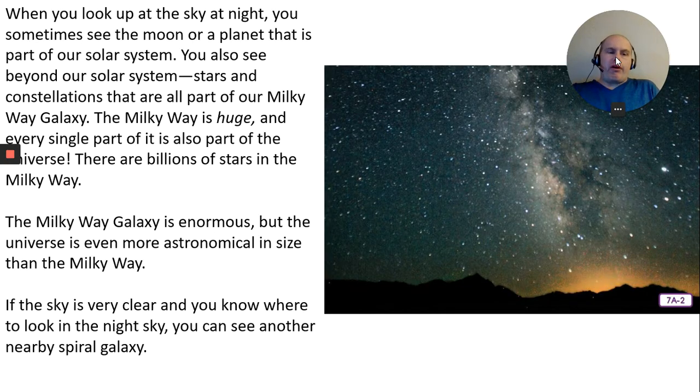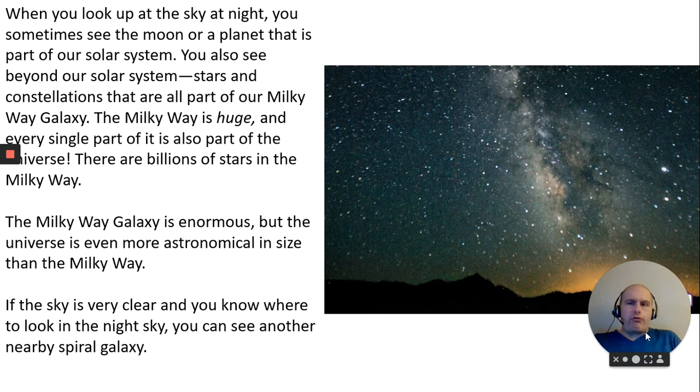So when you look up at the night sky, you sometimes see the moon or a planet that is part of our solar system. You also see beyond our solar system stars and constellations that are all part of our Milky Way galaxy. The Milky Way is huge, and every single part of it is also part of the universe. There are billions of stars in the Milky Way. The Milky Way galaxy is enormous. But the universe is even more astronomical in size than the Milky Way.